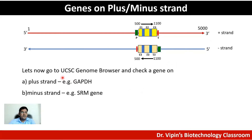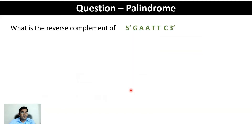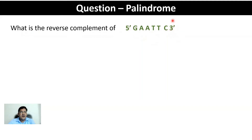We'll go to the UCSC Genome Browser and check a gene on the plus strand — for example GAPDH — and a gene on the minus strand — for example SRM, or spermidine synthase. Before that, let's do a simple question to test whether you've understood the concept: what is the reverse complement of five prime GAATTC? One thing to remember is that even if five prime and three prime are not explicitly mentioned, the left end of a sequence represents the five prime end and the right end represents the three prime end.